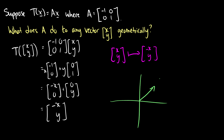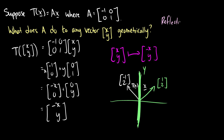For example, if we have the vector [1, 2] and plug it in as x, we get the output [-1, 2]. So this transformation is a reflection over the y-axis — it negates the x-component while keeping the y-component. If we have a vector pointing out in some direction and call it y, then T(y) is just its reflection over the y-axis.